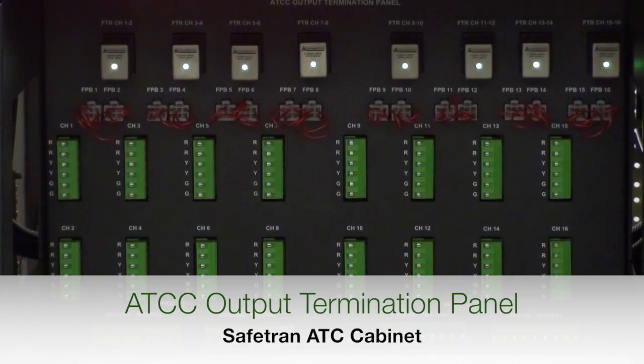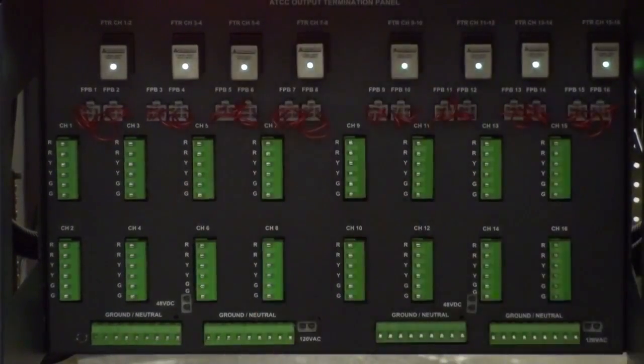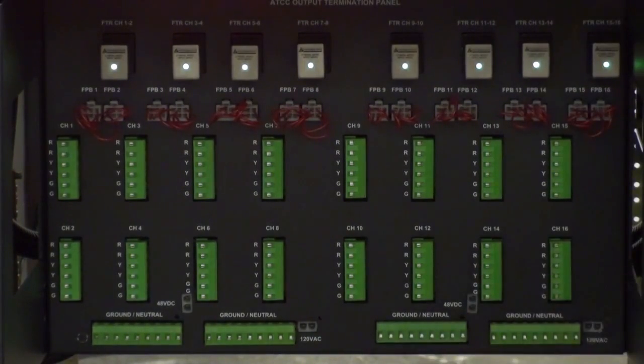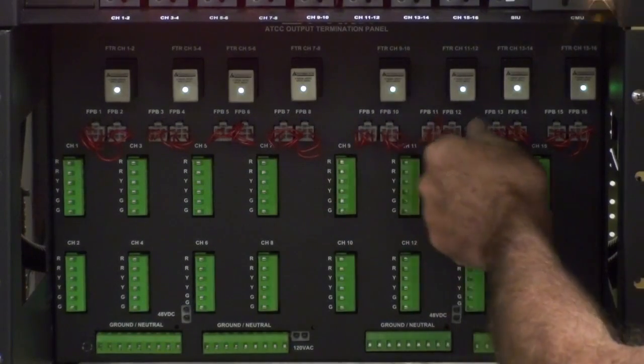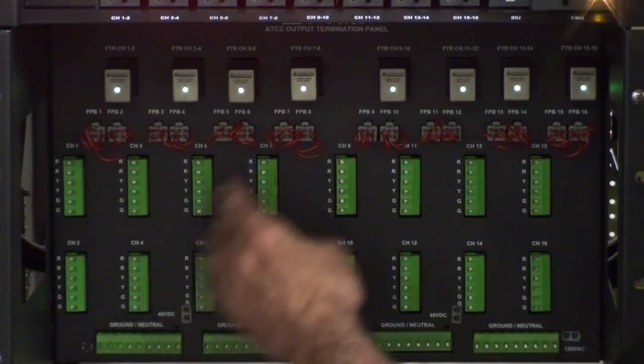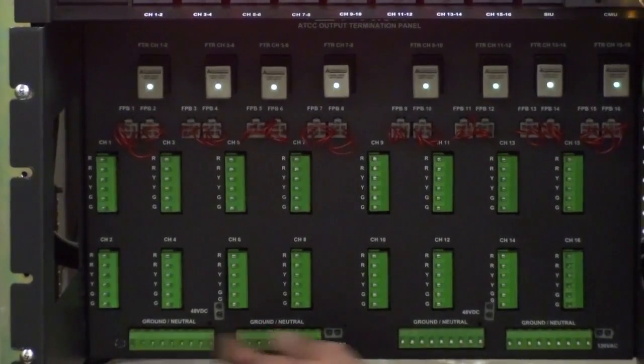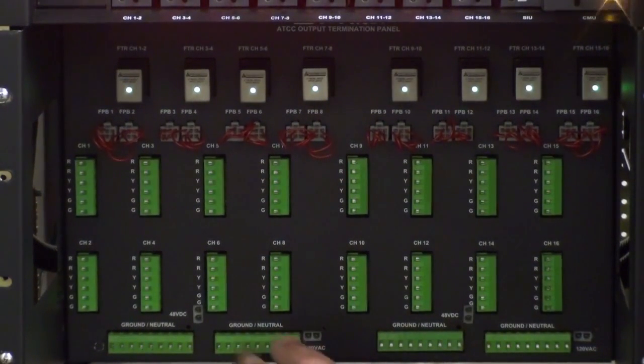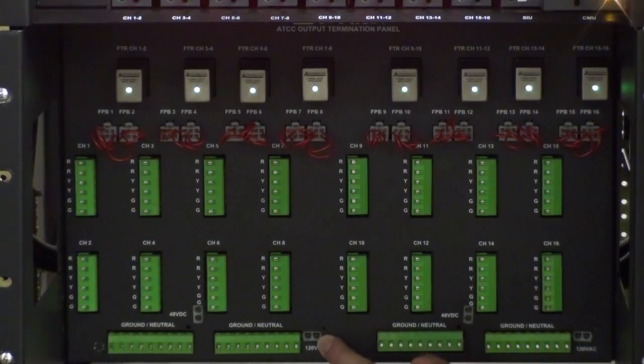Here is the output termination assembly. At the top are the new high-density flash transfer relays. Each relay includes an LED to indicate when it is active. The LED is activated through a third relay contact so that it will not light unless the relay has actually closed. Below the flash transfer relays are the new miniature flash program blocks. Below the program blocks are the pluggable Euro-style field wire terminal blocks. Along the bottom are the ground or neutral terminal blocks, configurable for 48-volt or 120-volt operation. Also included are these 48-volt DC and 120-volt source outputs that enable the field technician to apply power to the signal heads and confirm proper operation before the load switches are installed. Each output termination panel supports 16 channels.